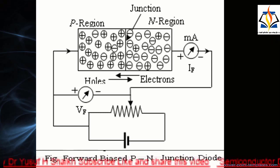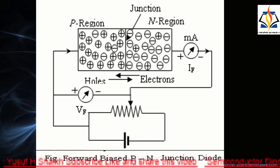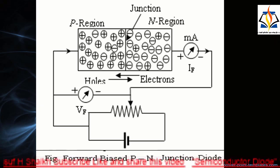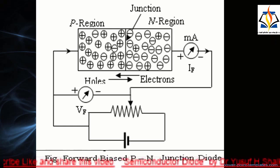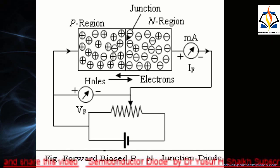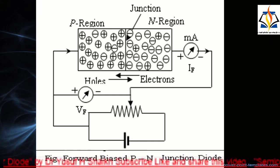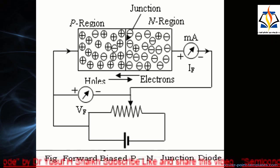Under forward bias conditions, holes in the p-region are repelled towards the junction due to the applied positive potential, whereas electrons in the n-region are also repelled towards the junction due to the applied negative potential. When the forward bias is greater than the barrier potential, the depletion layer is replenished with electrons and holes, causing the depletion layer and barrier potential to decrease and finally disappear.